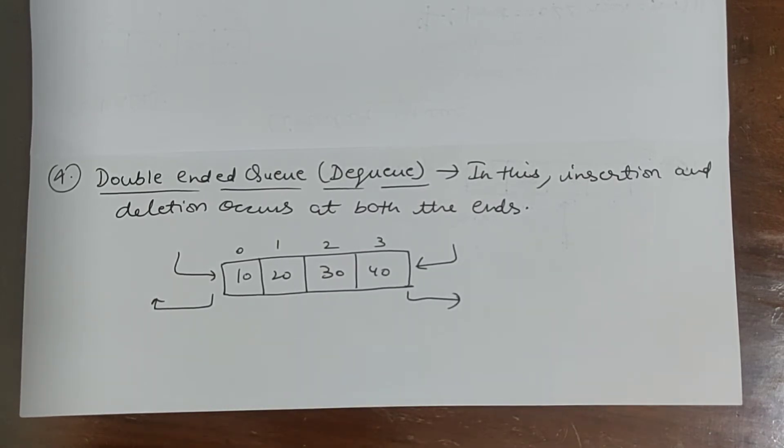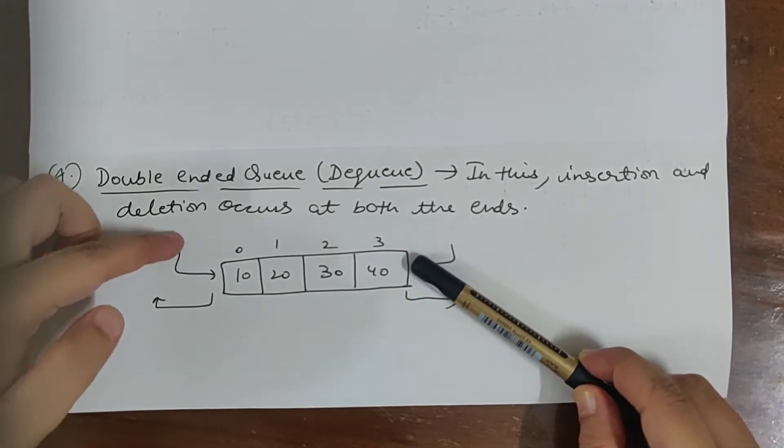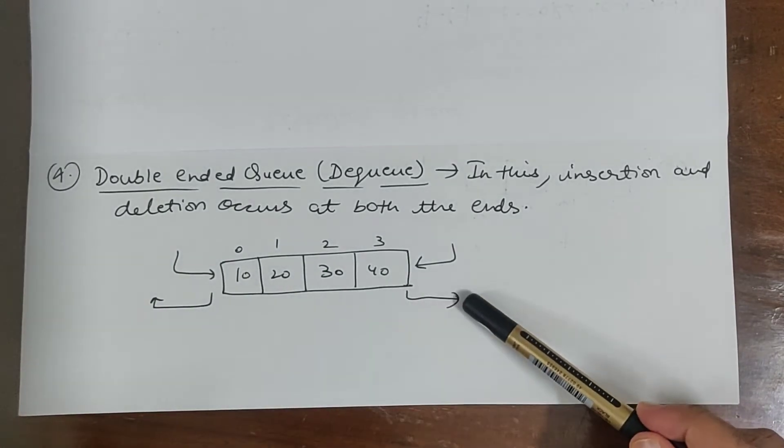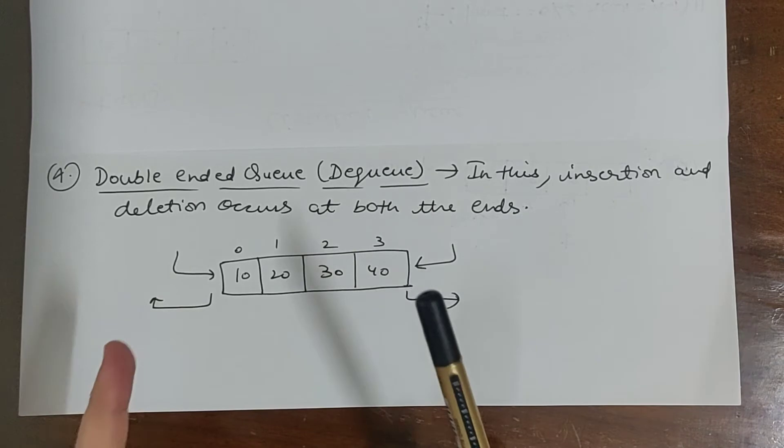But in case of double ended queue, as the name suggests, insertion as well as deletion occurs at both the ends. We can insert the data from this end and this end also, and delete the data from this end also and this end also.